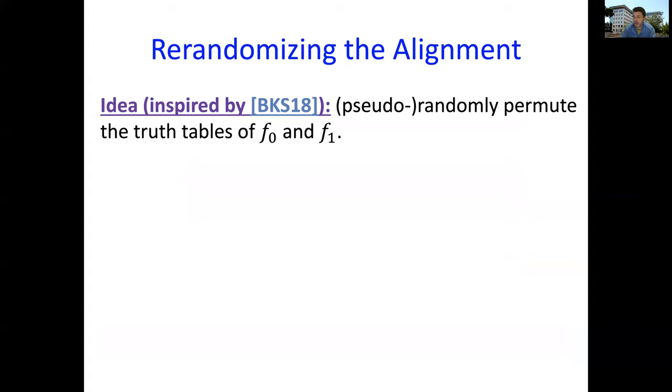In this situation we have, this example we have here, the errors are on top of one another, they're aligned, and then when you take the random linear combination, the error remains in the same place, you don't gain the extra errors. So the problem is that errors could be aligned. It's a big problem. The way that we resolve it is really inspired by a beautiful recent work by Ben Sasson, Coparty, and Sarov, which is in the context of testing Reed-Solomon codes. What we're going to try to do is randomly or pseudorandomly permute the truth tables of the functions f0 and f1.